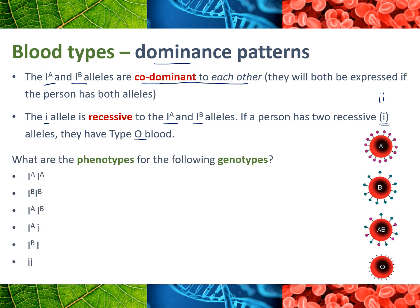They have no antigens, and that is what we call type O blood. So I would pause here and think: can you figure out what the phenotypes — A, B, AB, and O — would be for each of these genotypes? I^A I^A would be type A blood, they've only got the A allele. I^B I^B would be type B blood. I^A I^B will be type AB because they're codominant and both will be expressed. I^A with a recessive lowercase i will be type A, because I^A is expressed over the recessive allele. I^B with lowercase i will be type B. And two recessive lowercase i alleles will give us type O blood.